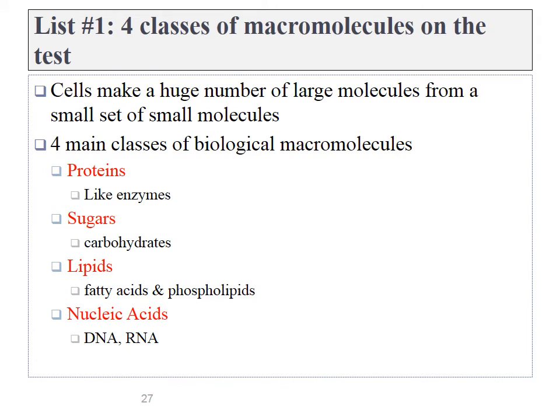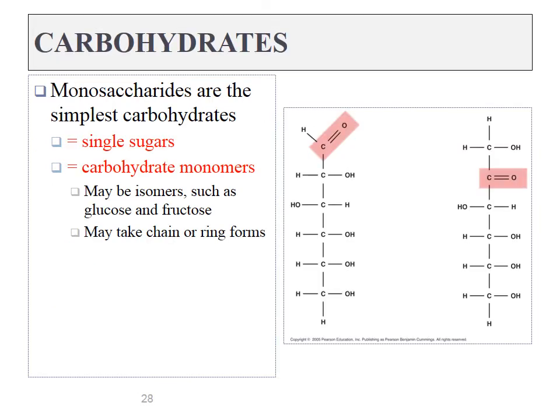Next up, we should cover the four main types of organic molecules that we find in the human body. And those are proteins, sugars, lipids, and nucleic acids. First up, the sugars, or carbohydrates, I should say.